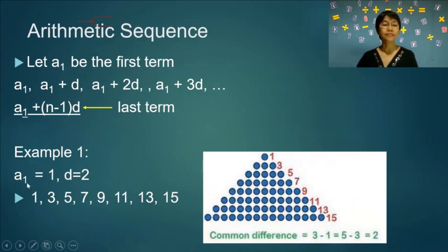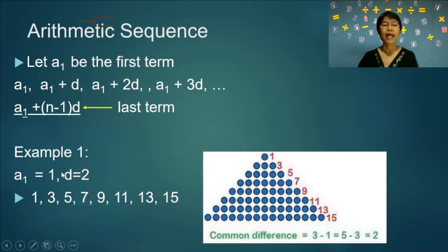For example, a₁ equals 1 and the common difference is 2. As shown in the illustration, we start with one ball and then add two balls at each level, so we have 1, 3, 5, and so on up to 15. The common difference is 2.